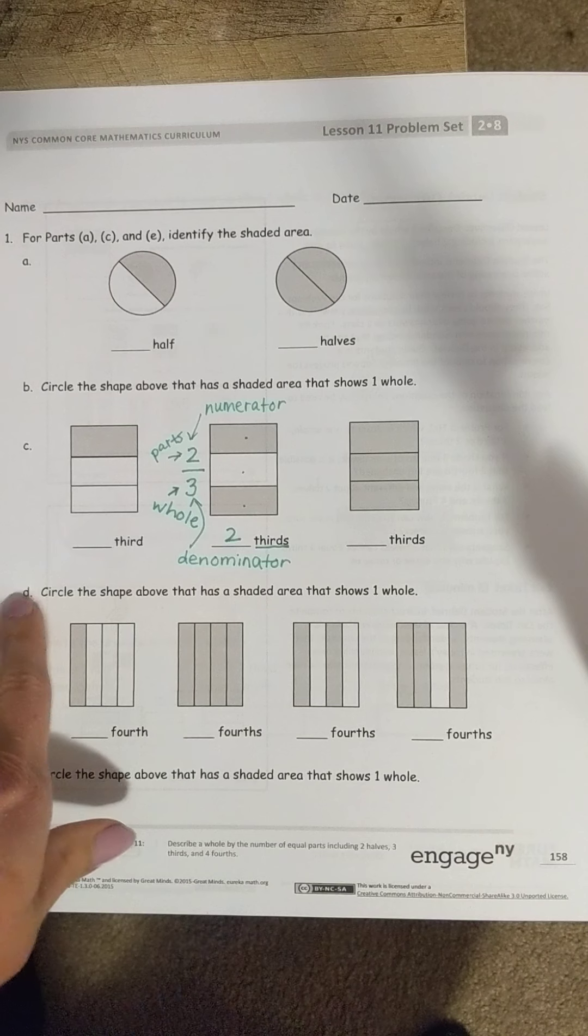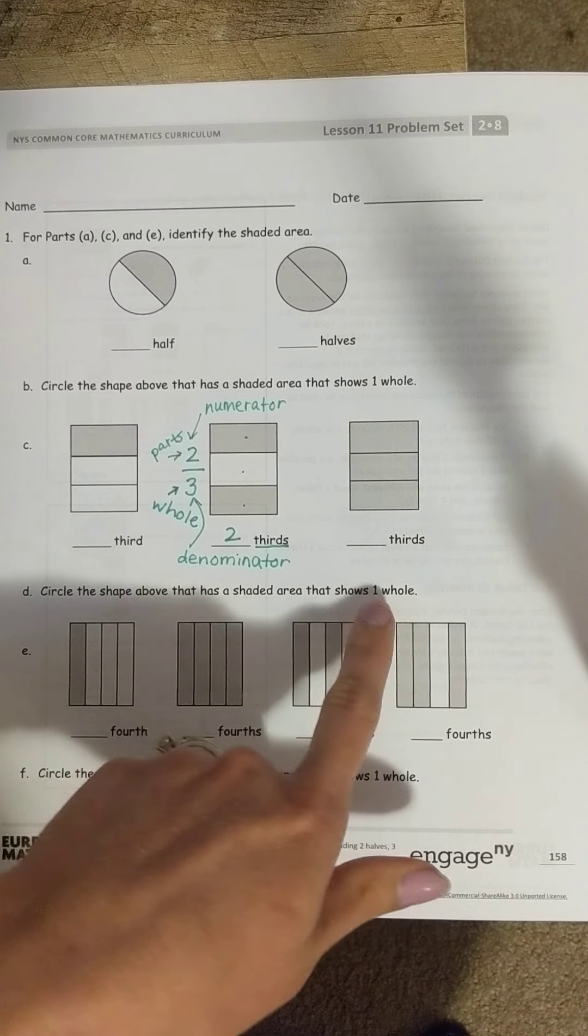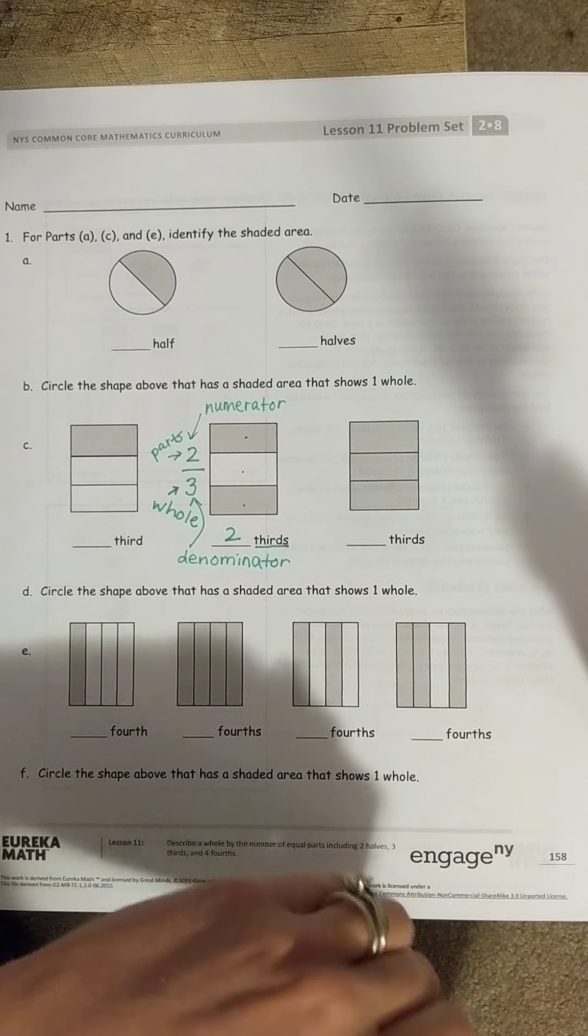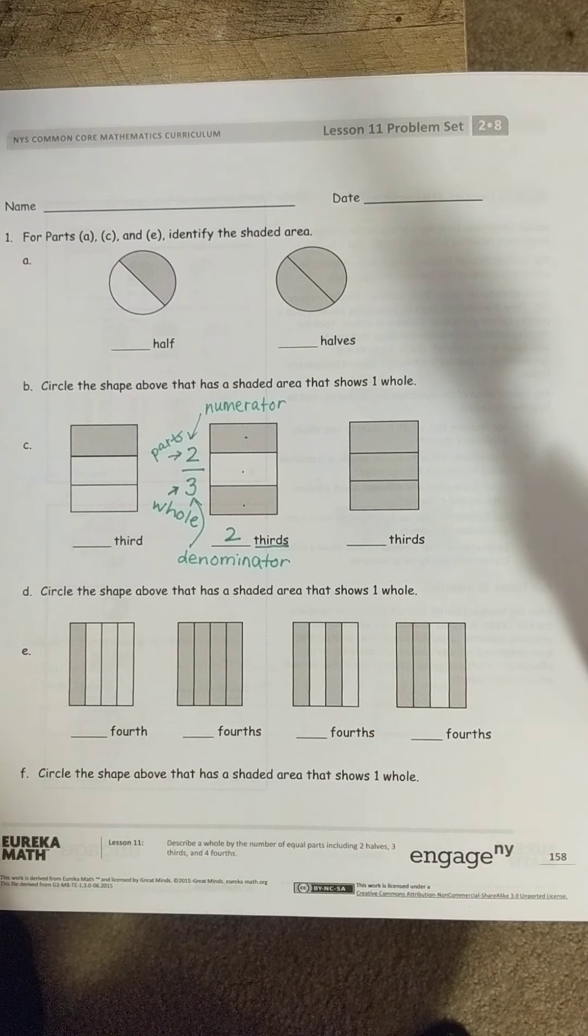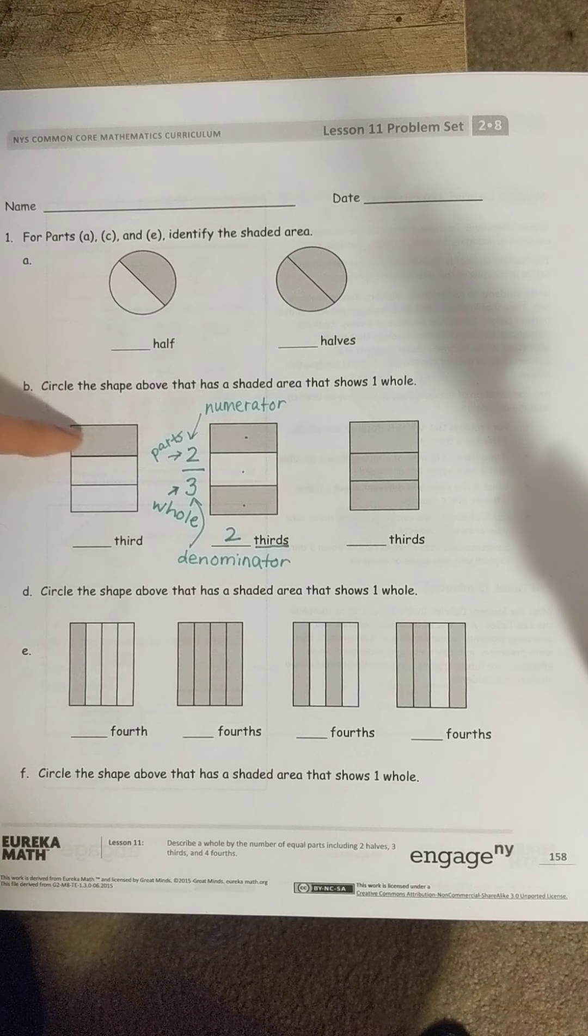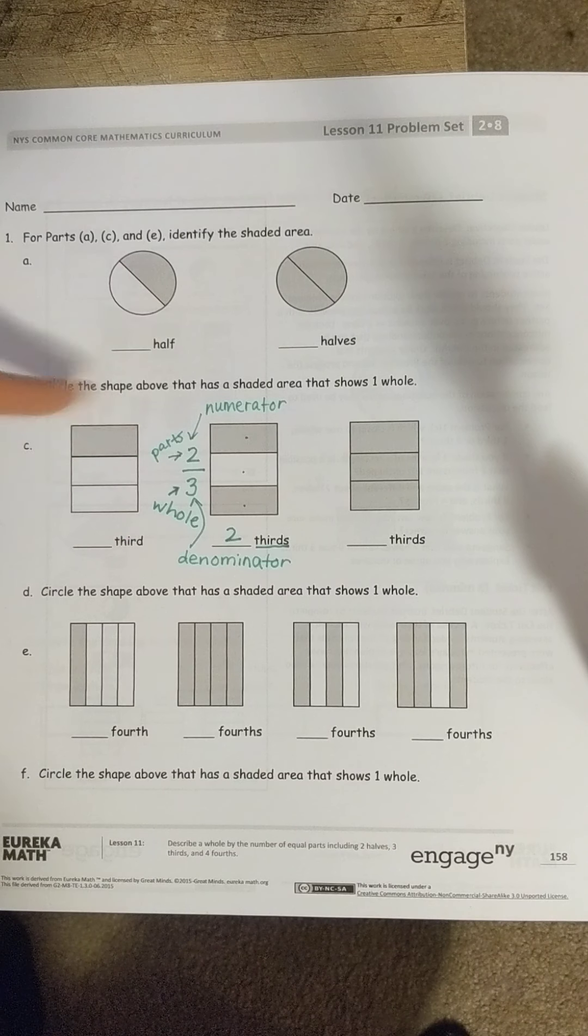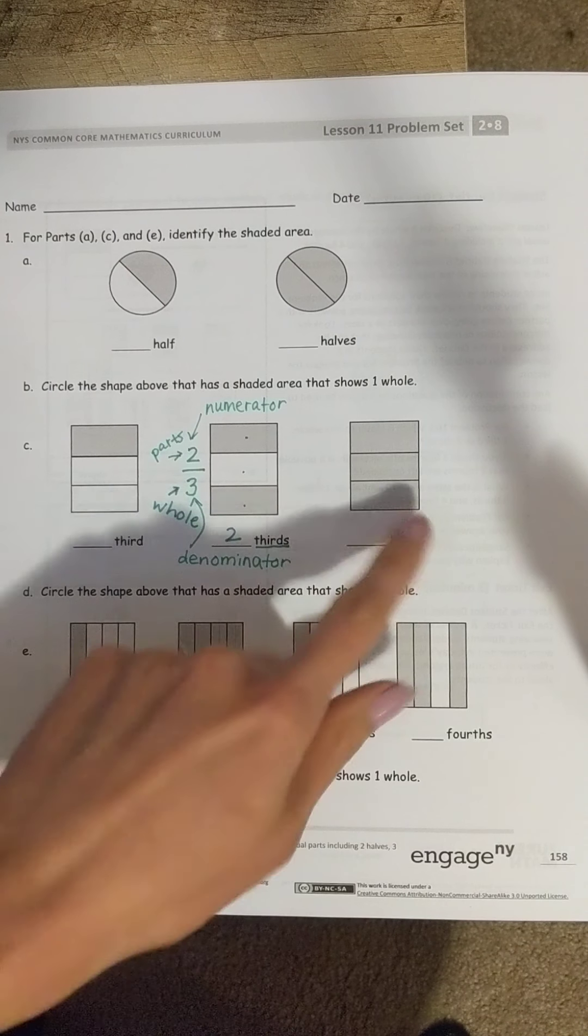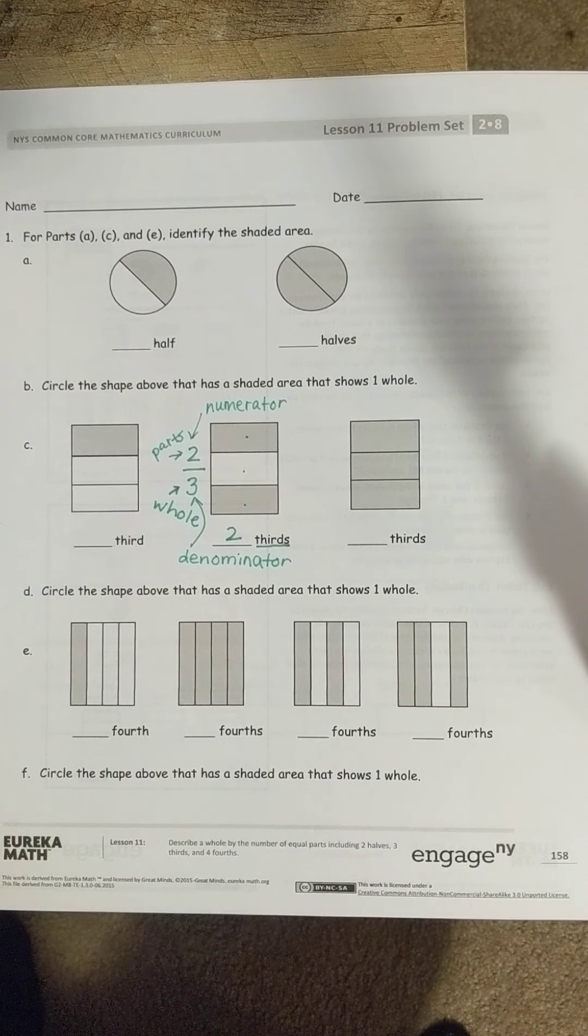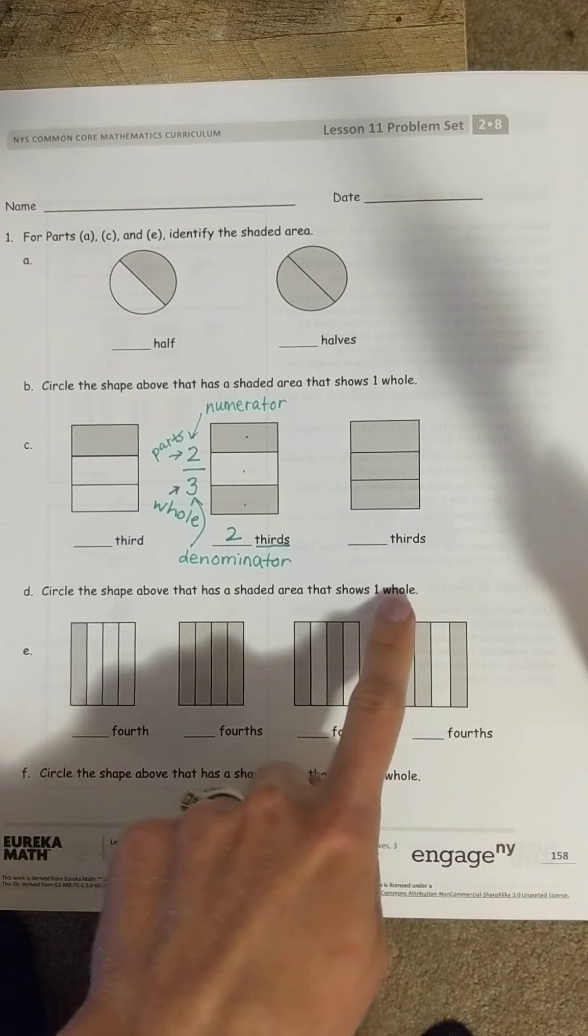In part D down here, it says circle the shape above that has a shaded area that shows one whole. So that means when it says shaded that the whole shape needs to be colored in. Looking here, that's one out of three pieces that are shaded. That's definitely not the whole shape being shaded. But, if I look over here, this one is colored in all the way. That means that shows one whole.